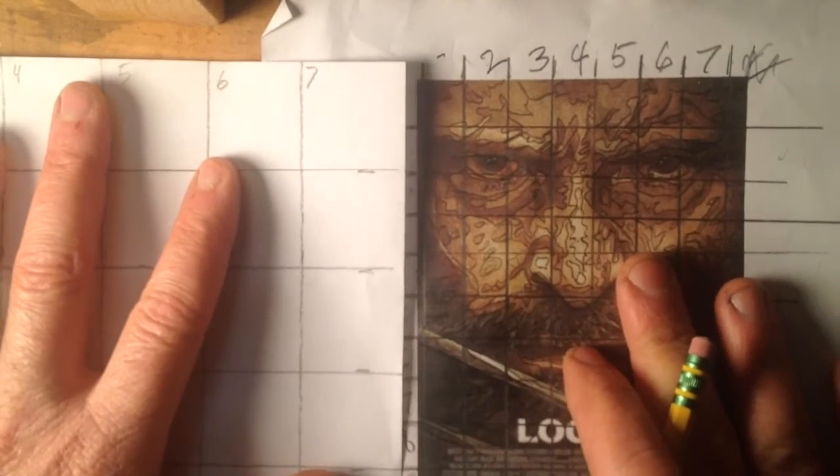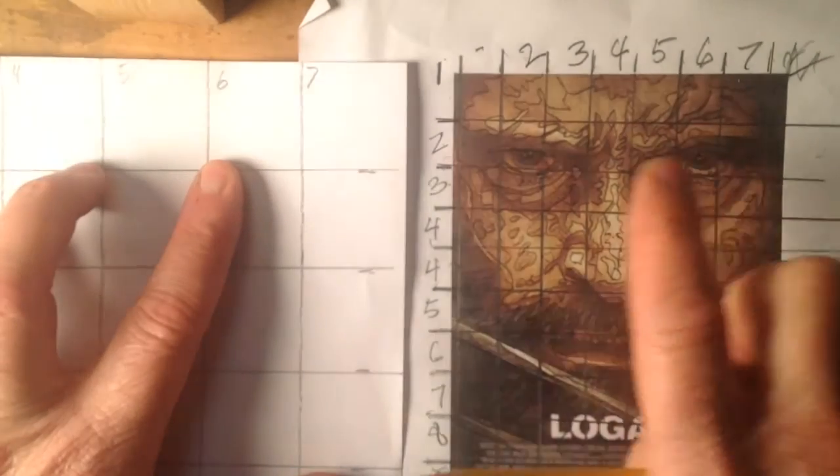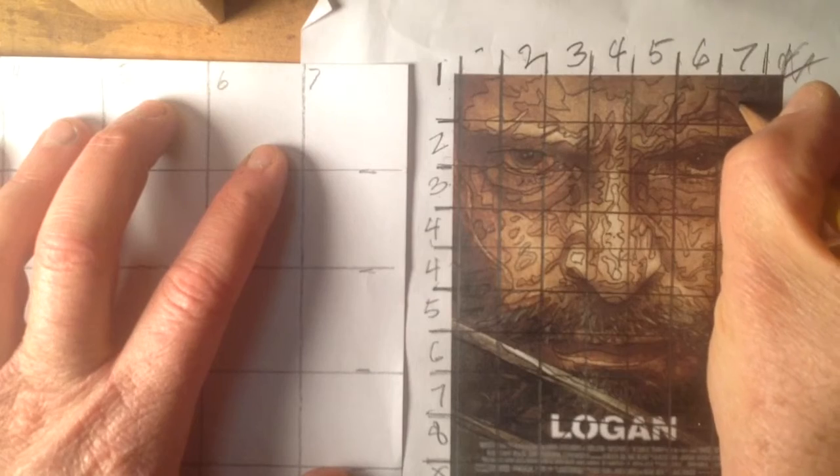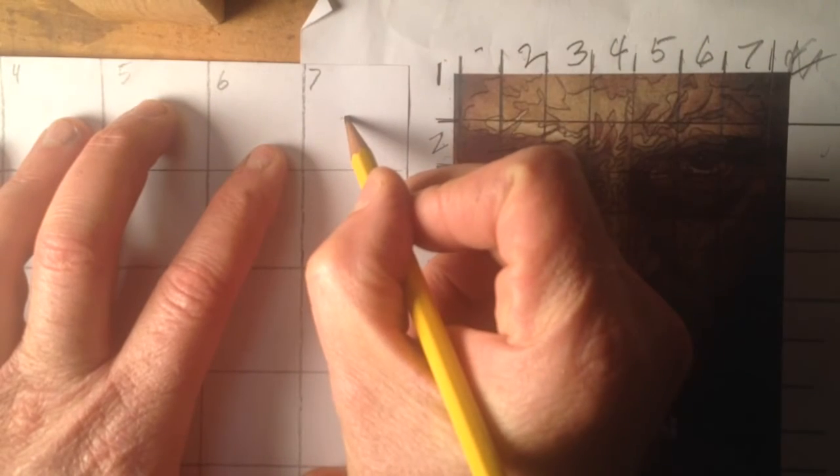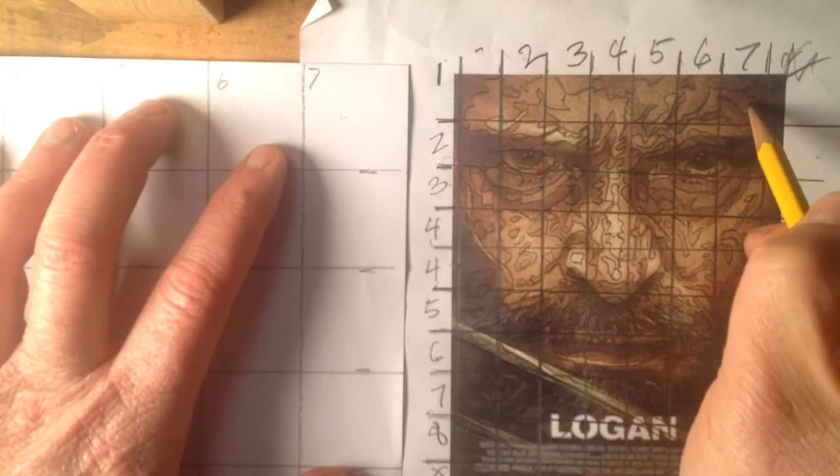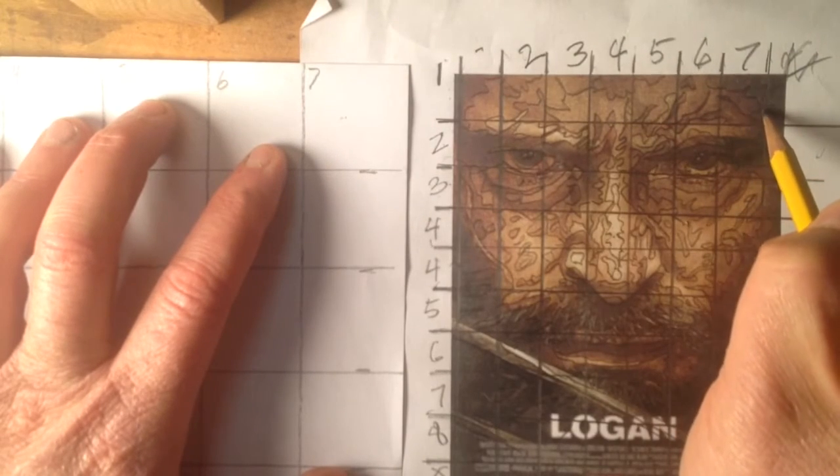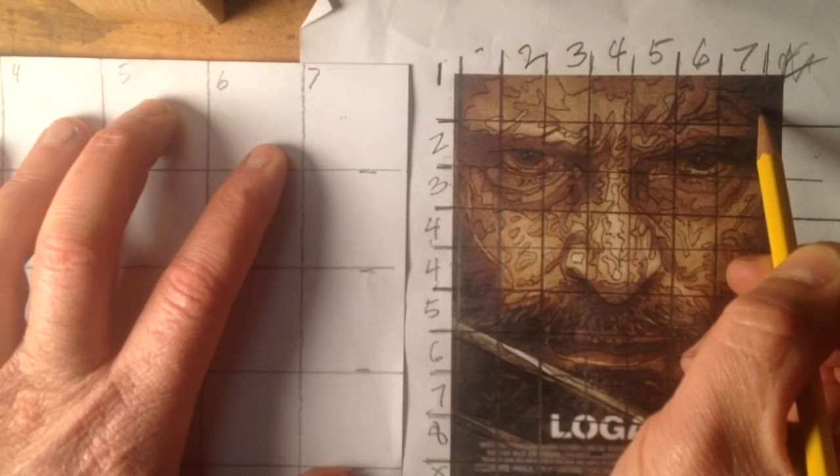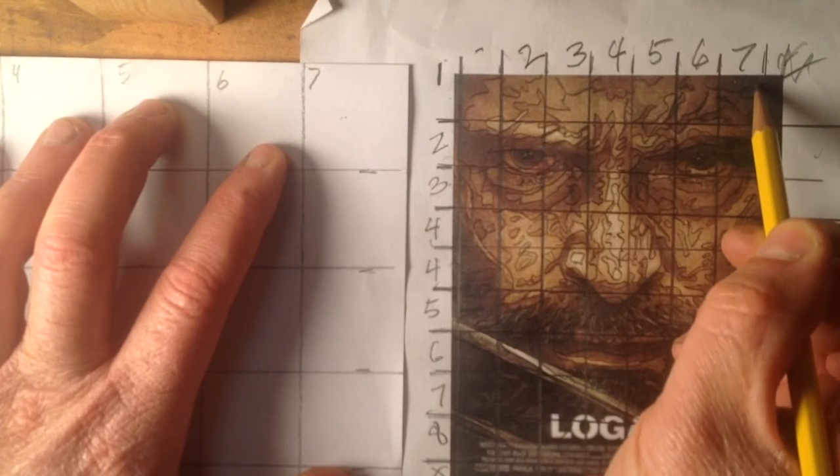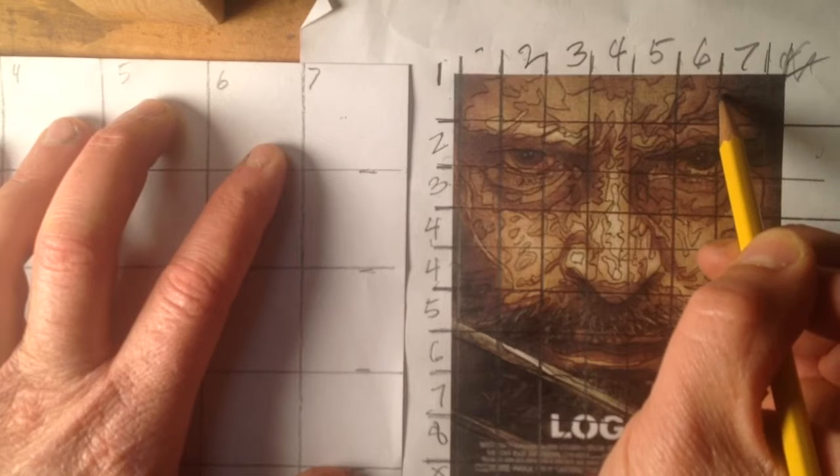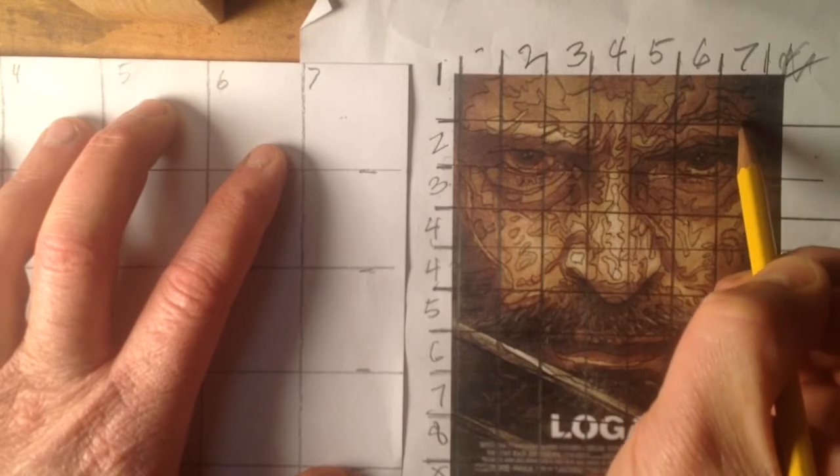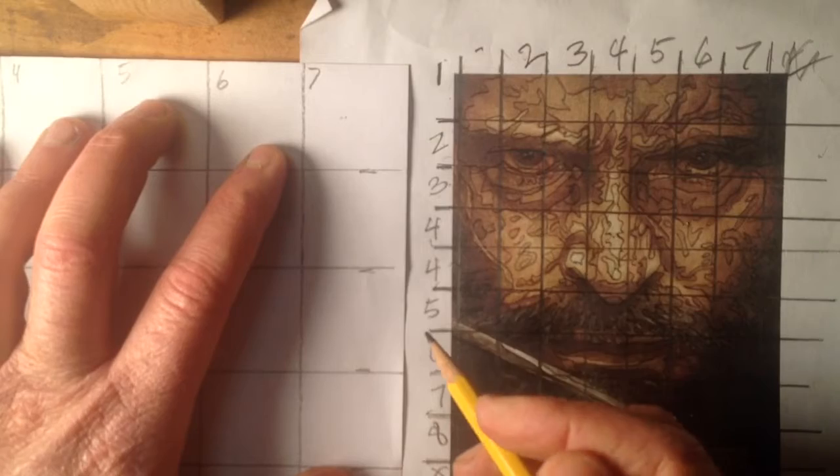So when you start to do your transfer of this over from this to this, what you're going to want to do is pick out a square you want to start with. I'm going to start with this square right here, number seven. And that corresponds to this square over here, number seven. So everything that I see in this square, including the lines that I used for my values, I'm going to transfer over. So I can see in this square right here that there's a line that comes up and goes right around this way.